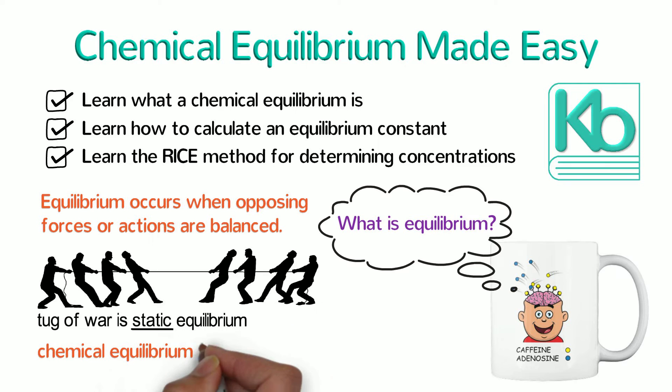A chemical equilibrium is a dynamic equilibrium. That is, a chemical equilibrium involves constant motion, kind of like a water fountain. The water is constantly in motion, but it stays in the same place more or less.